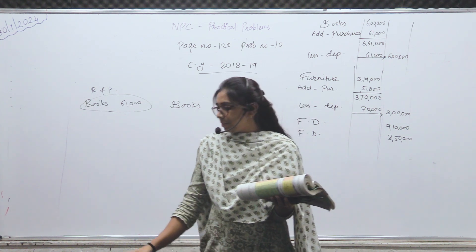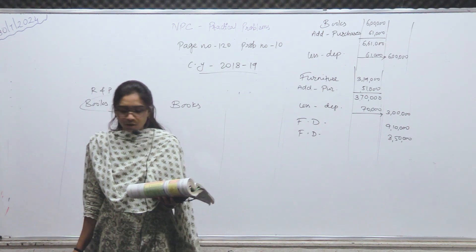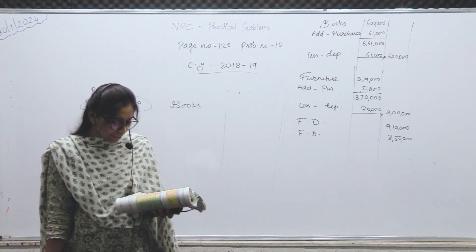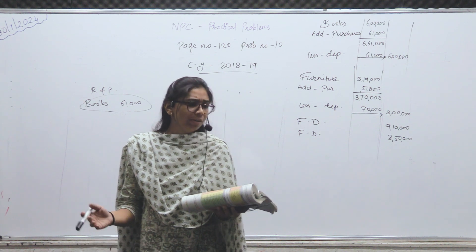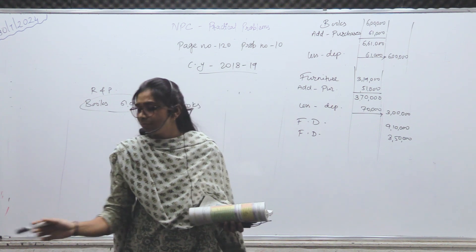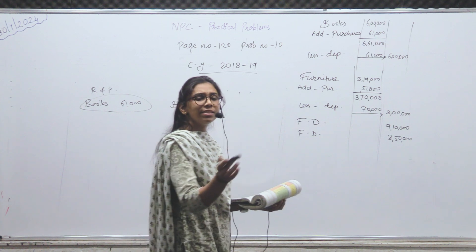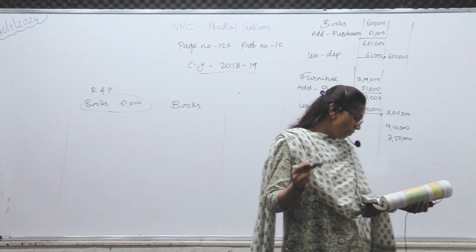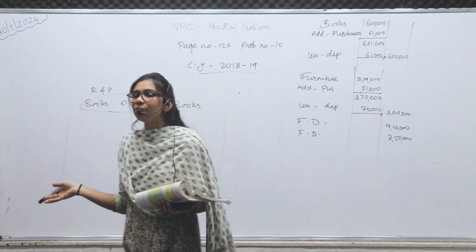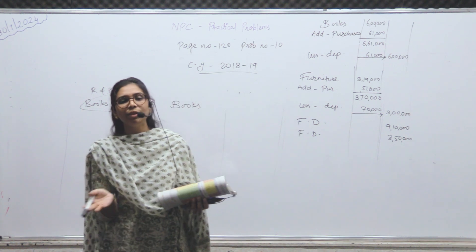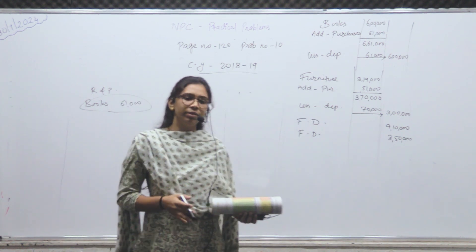अभी adjustments में ध्यान दो। First — 50% of donations are for building fund and balance is to be treated as revenue। Donation में से 50% निकालना है और building fund को देना है। Donation में से 50% less करोगे, building fund में 50% add करो। Tick mark करो donation को और building fund को।